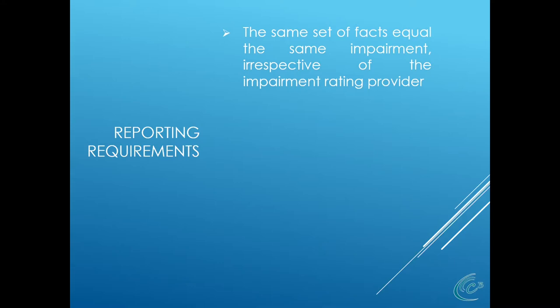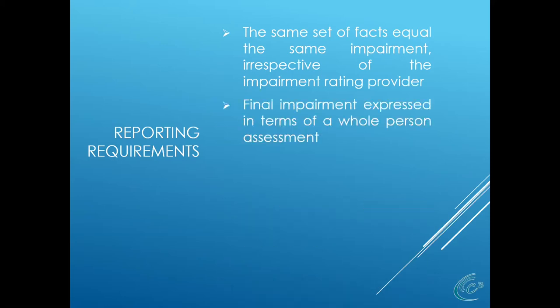So whether that amputation of the fifth digit happened in Amarillo or Brownsville, it would be the exact same 5% whole person impairment. We had issues under the old law where somebody hurt their back in Williamson County and got a 5% impairment rating, but down in McAllen or Laredo they'd be called 100% disabled. That inconsistency, paying out a lot more money in certain jurisdictions, precipitated the workers' compensation crisis in Texas in the late 1980s and early 1990s.